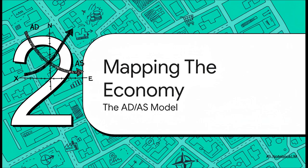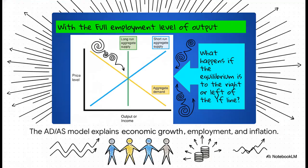To sort through all this complexity, economists use this really powerful framework called the aggregate demand/aggregate supply model, or AD/AS for short. You can honestly think of it like a GPS for the whole economy. At its heart, the model is pretty simple — it just plots the overall price of everything against the country's total economic output. And by looking at where those two lines cross, we can pretty much diagnose the economy's health and start to understand what's behind things like inflation and unemployment.